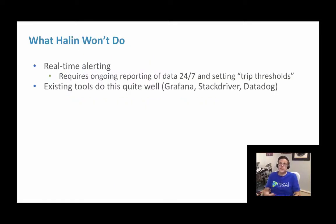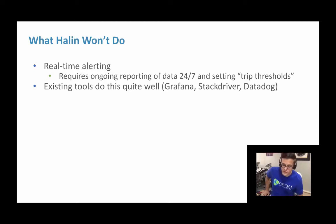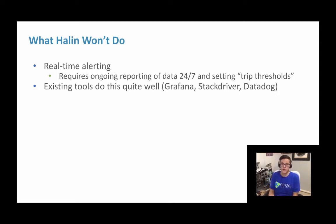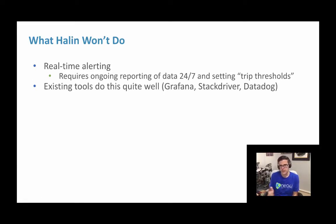A couple of limitations: Halen won't do real-time alerting, 24/7 monitoring, or setting of trip thresholds. Today's talk was to introduce the ideas of Prometheus, JMX monitoring, how these metrics get sent from Neo4j, how you can visualize them, and what they mean. If you have bespoke needs — say you're part of a big enterprise and you want somebody paged whenever page cache faults exceed a certain threshold — Halen is not for that use case. For that, there are tools like Grafana, Stackdriver, and Datadog, and the problem then looks a little bit different: instead of visualizing what's going on with your cluster, you're taking Prometheus metrics, shipping them to a service like Datadog.